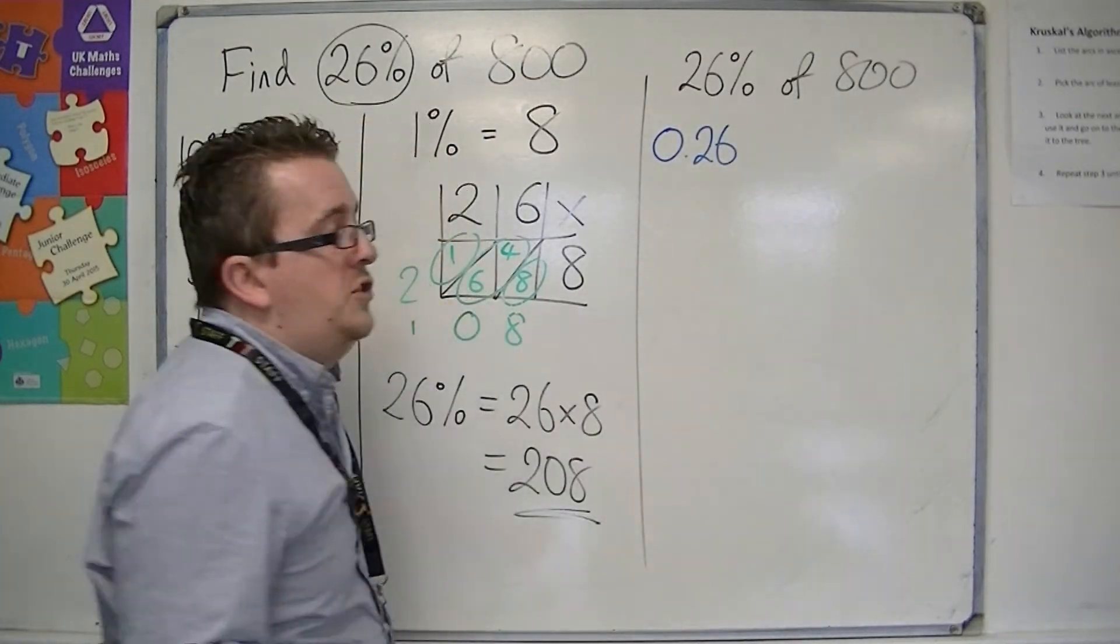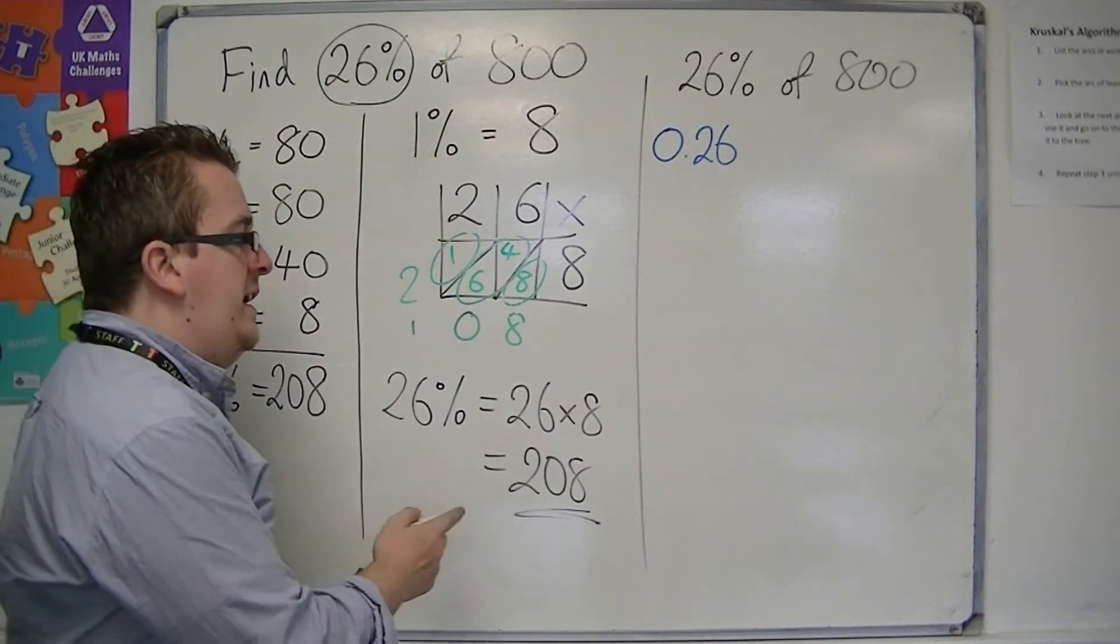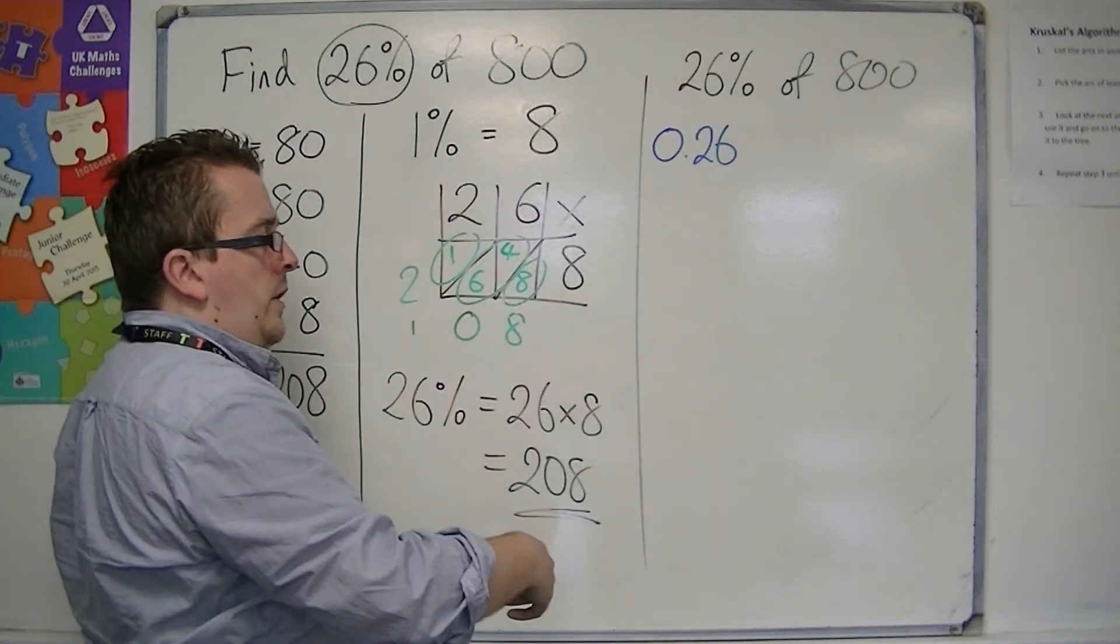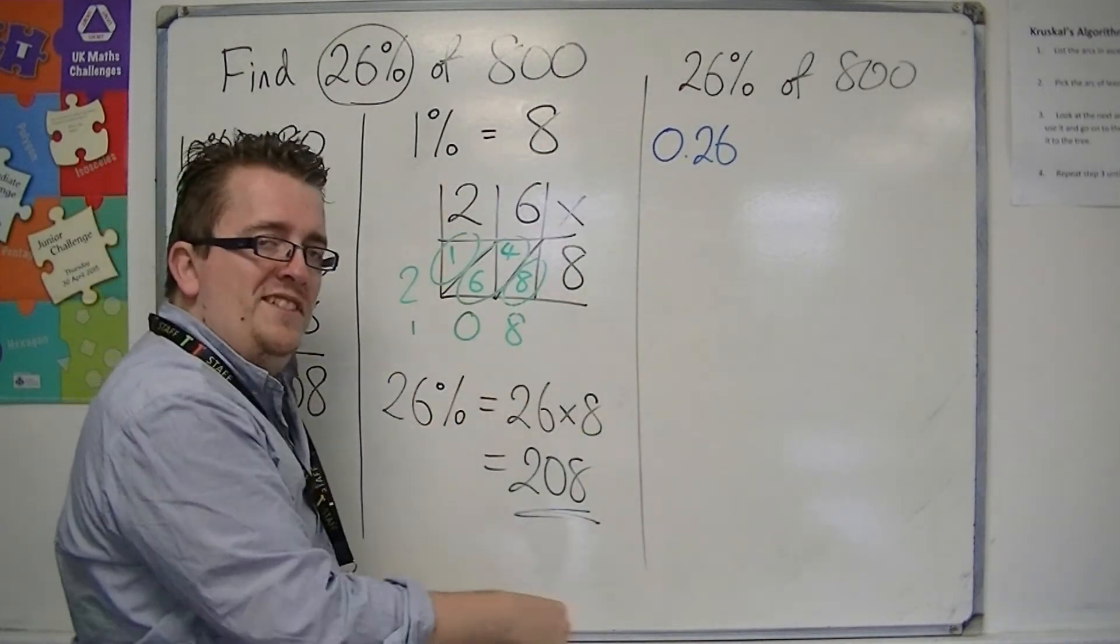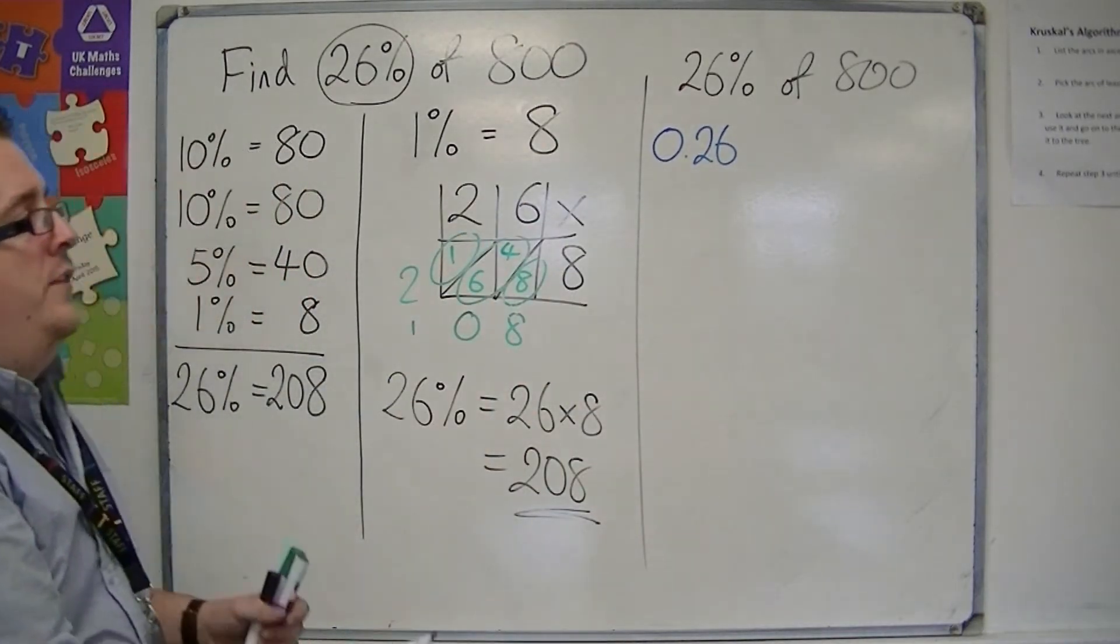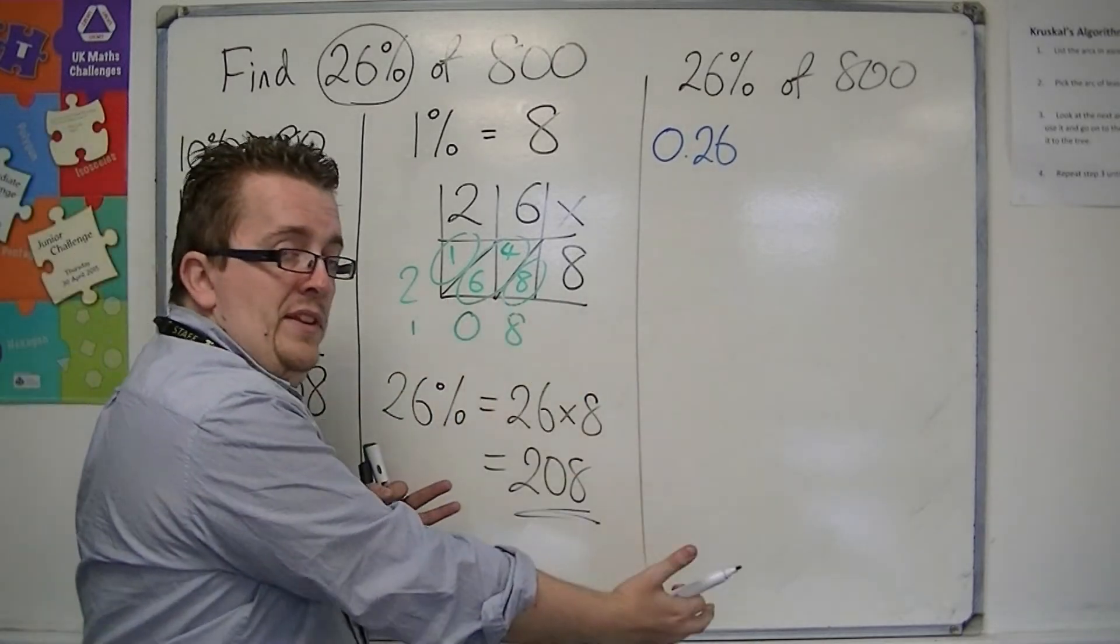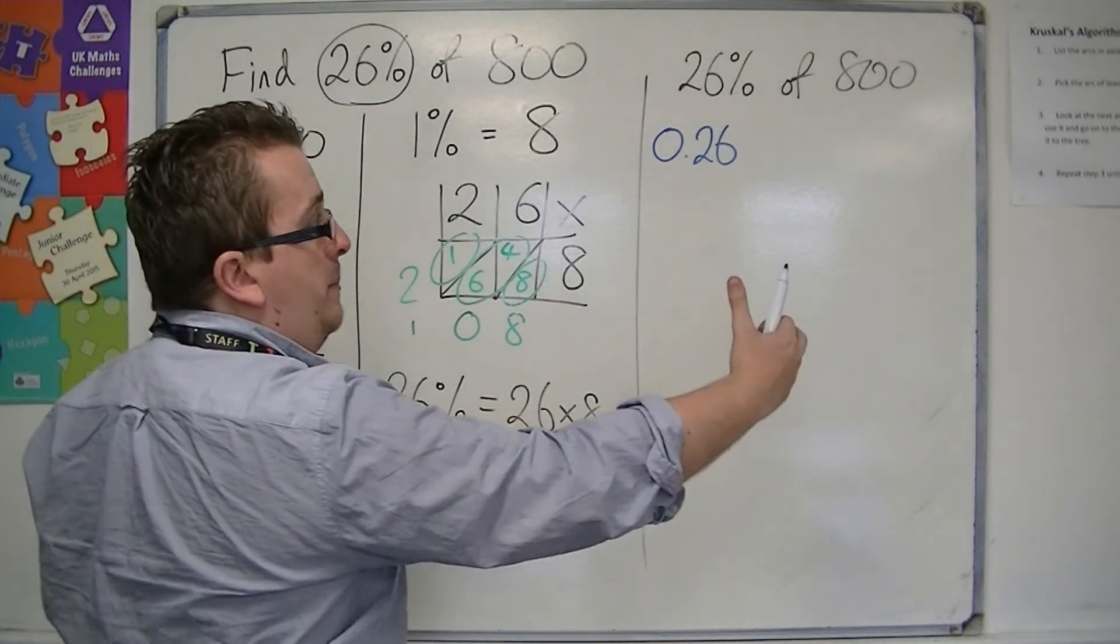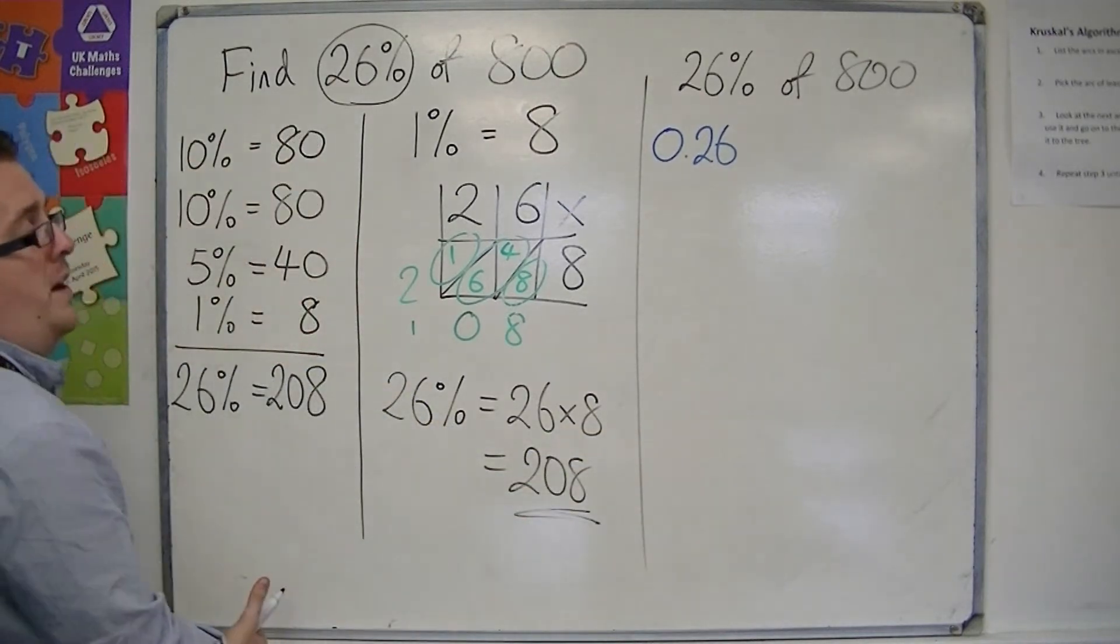If you look back at the video where I looked at fractions, decimals, and percentages, to get from the decimal to the percentage, you multiply by 100. So to go from the percentage to the decimal, you divide by 100.